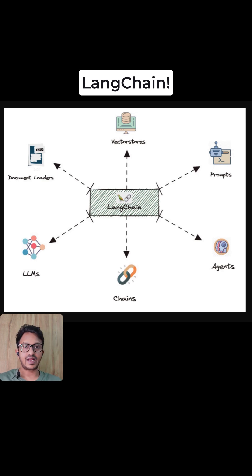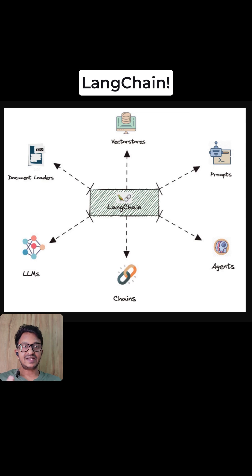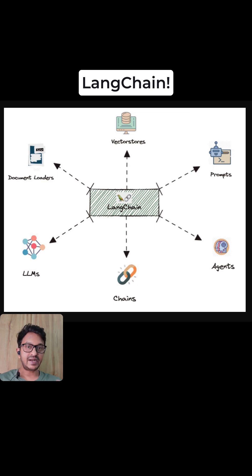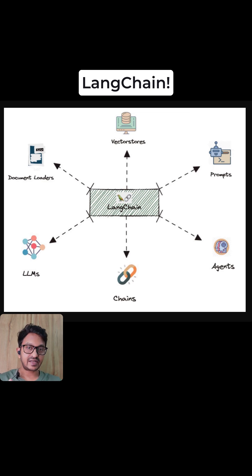It can be OpenAI, Anthropic, Mistral, or anything. LangChain has a core component called chains — combining multiple components in a sequence to create an LLM workflow. That's how you can build an LLM chain or transform chain, where each step feeds into the next. That's basically how the name 'chains' comes from.